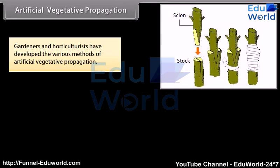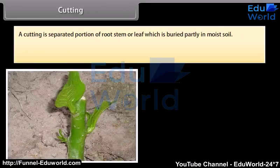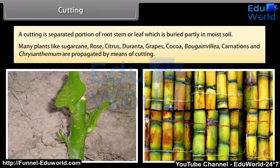Gardeners and horticulturists have developed various methods of artificial vegetative propagation. Some common methods are cutting, layering, grafting, budding, and tissue culture. A cutting is a separated portion of root, stem, or leaf which is buried partly in moist soil. Many plants like sugarcane, rose, citrus, duranta, grapes, bougainvillea, carnations, and chrysanthemum are propagated by means of cutting.